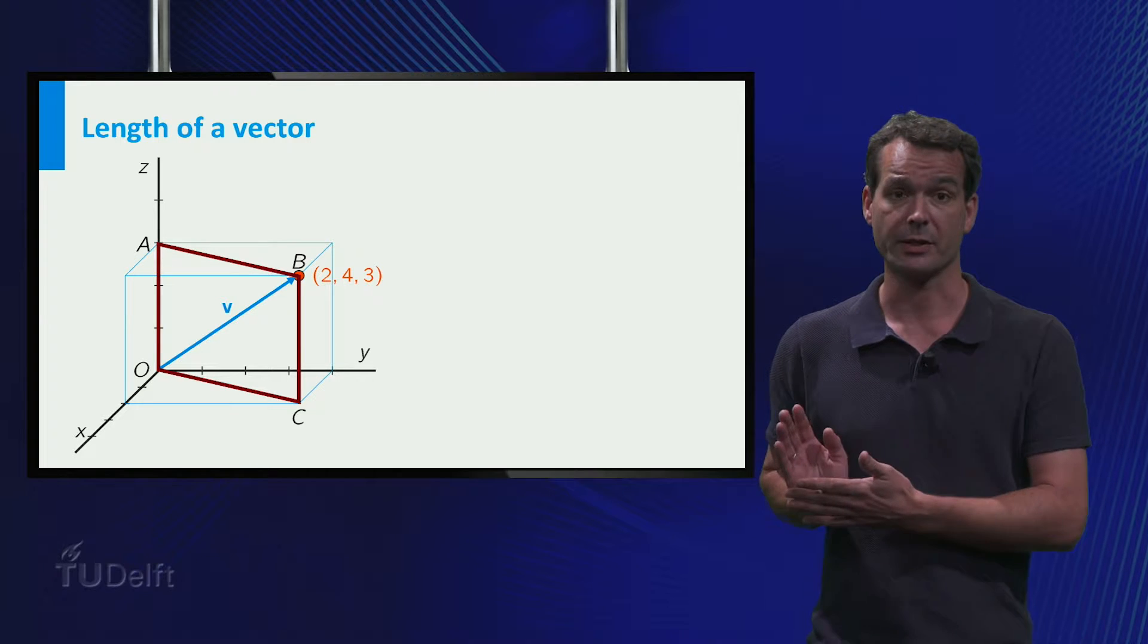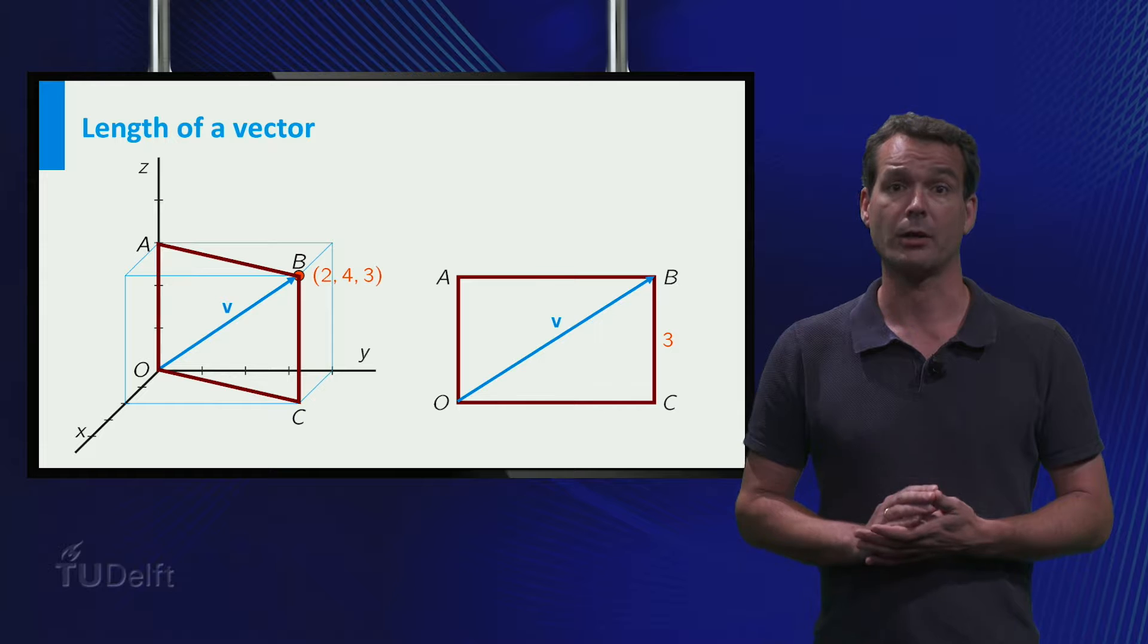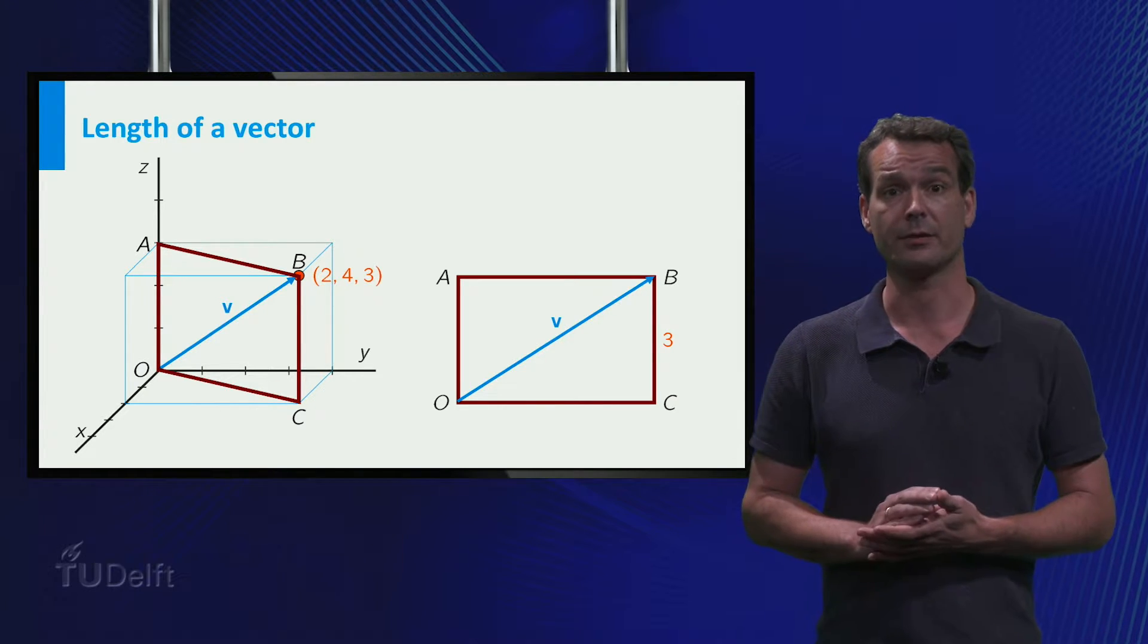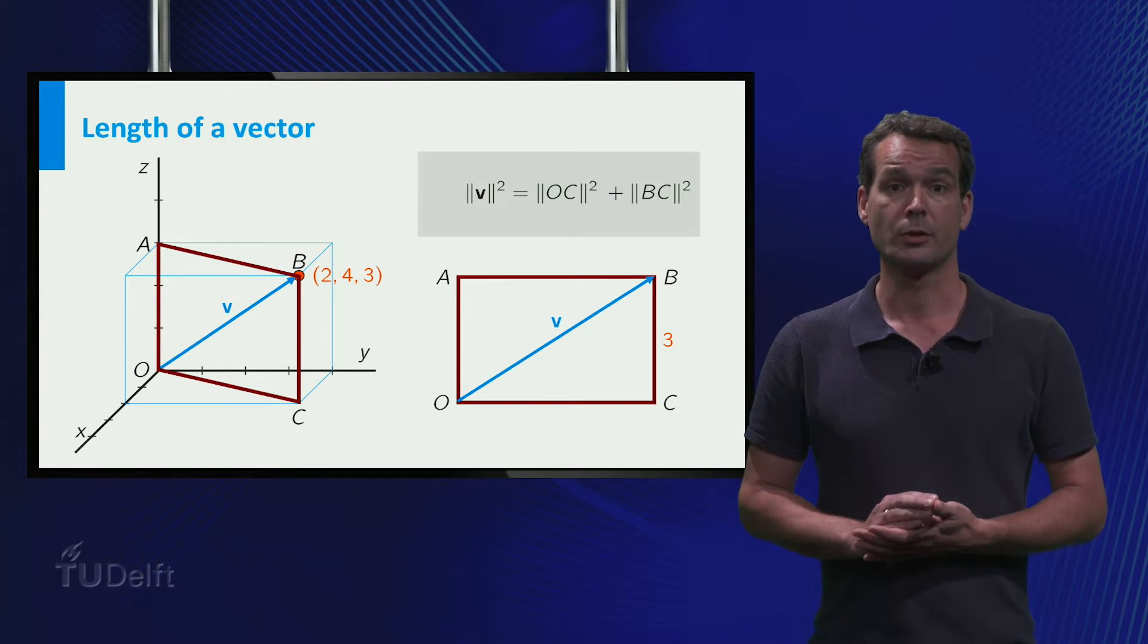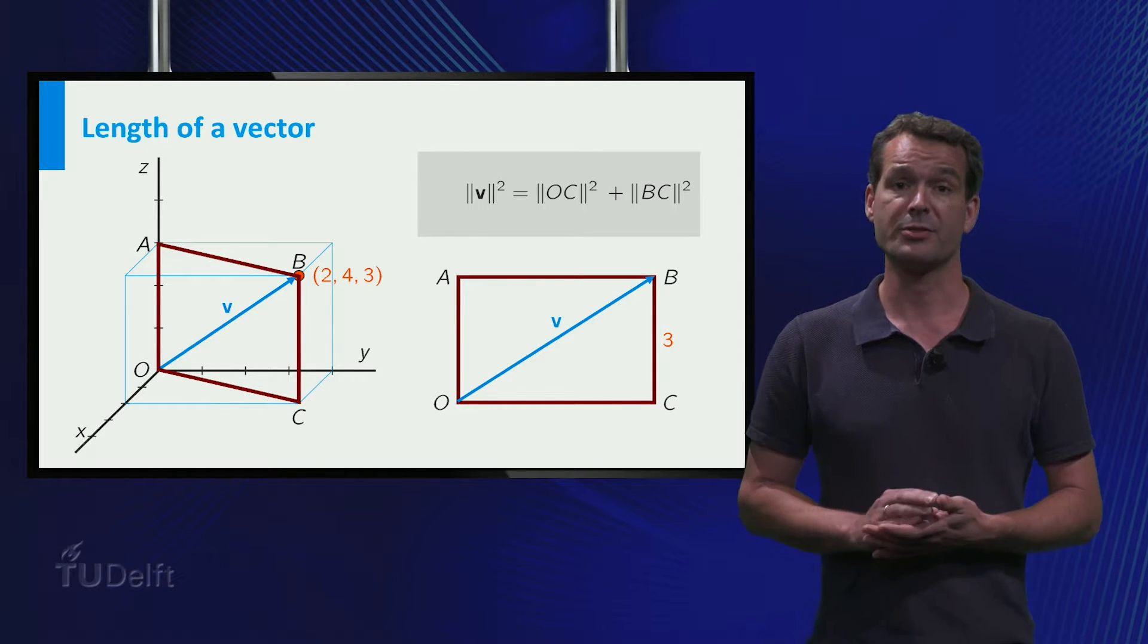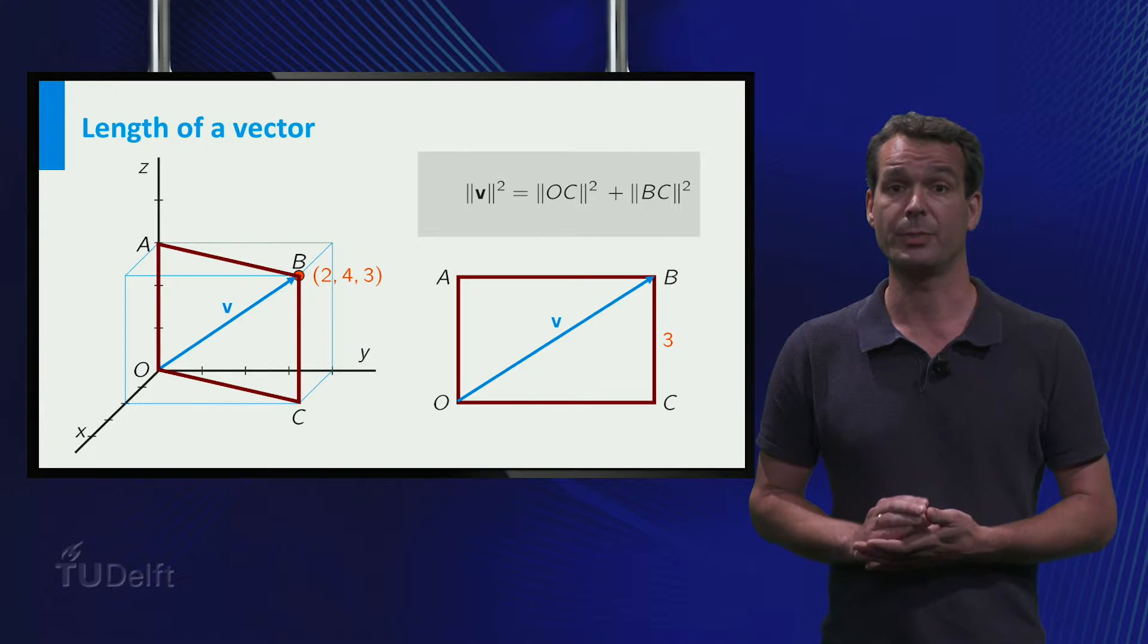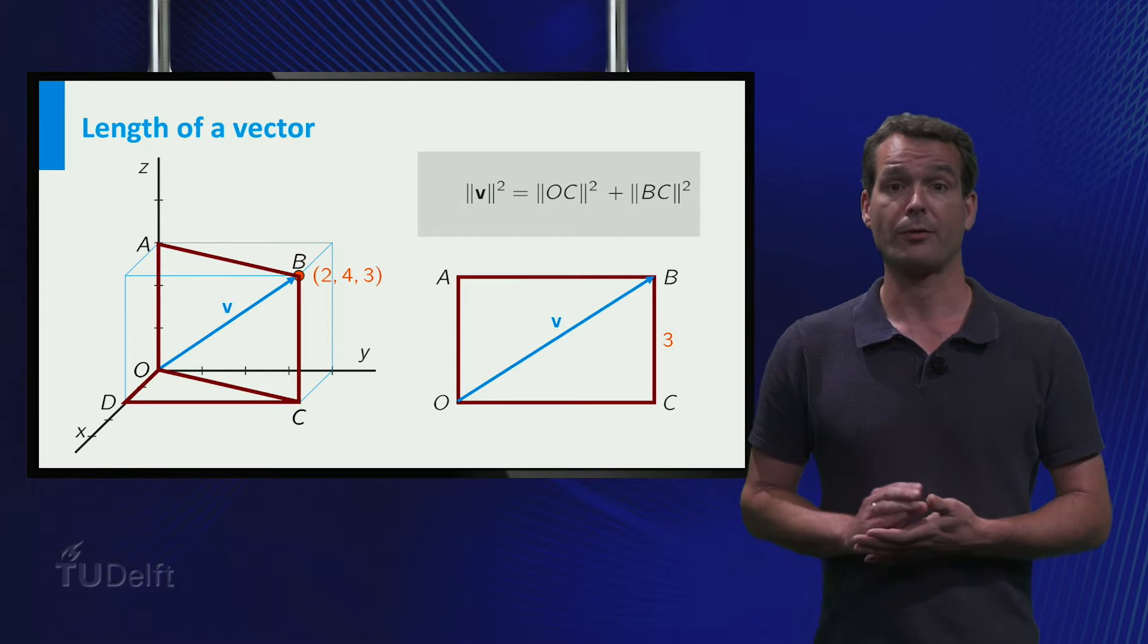As you can see in the picture, the vector is the hypotenuse in the right triangle OBC. So we can use the Pythagorean theorem to calculate its length. Then the norm of V squared is equal to the norm of the vector BC squared plus the norm of OC squared. So you can see that the length of BC is 3, so now we need to calculate the length of OC.